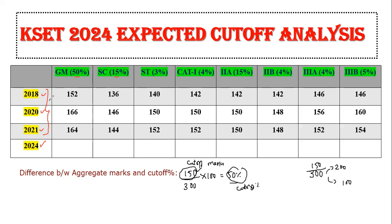For general merit: 2018 was 152, 2020 increased to 166 — maybe the question paper was easy — and 2021 was 164. Based on these, the expected 2024 cutoff for general merit is around 162 to 166. If your marks lie between 162 to 166, that is the safest range. For SC, it is 142 to 146, and for ST, it is 146 to 150.